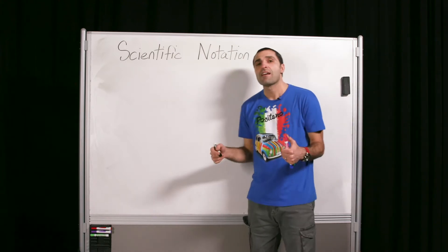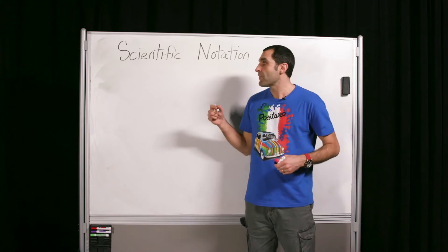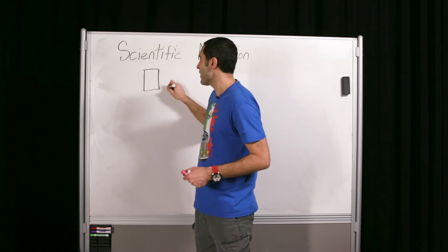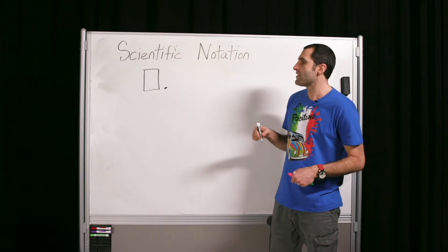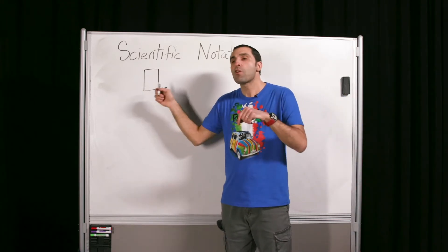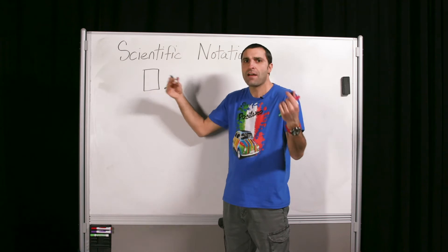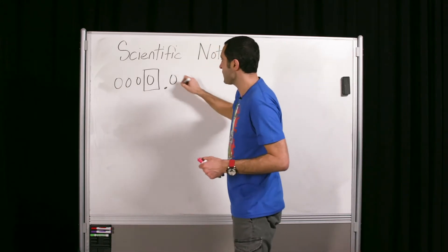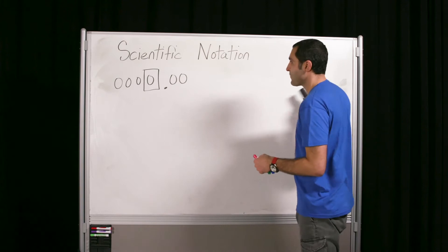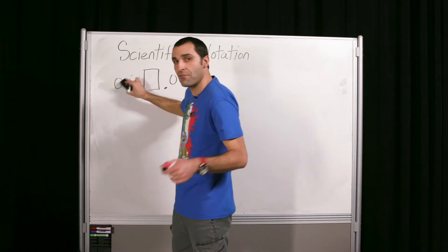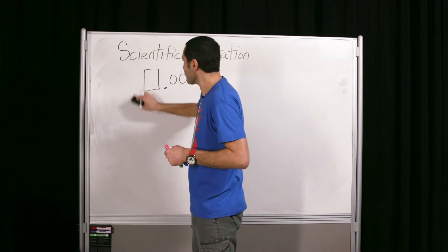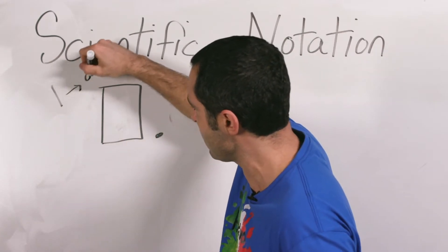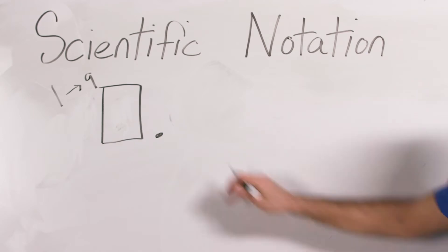Scientific notation has a couple very important rules. The first rule is, for consistency, you have to have one digit, then the decimal place. This thing can't be zero-point-something, because if you could have zero here, you could have zero, zero, zero, zero. We don't want that. So in order to prevent this from happening, this single digit has to be somewhere between one to nine. And then you could have your digits after.